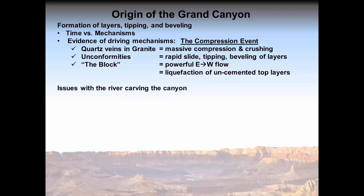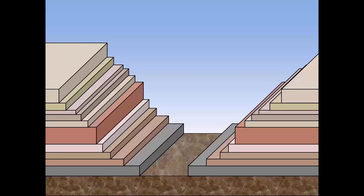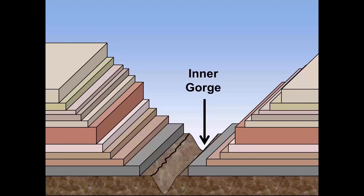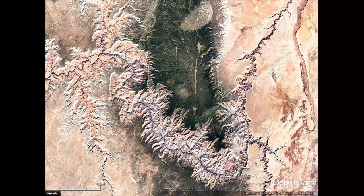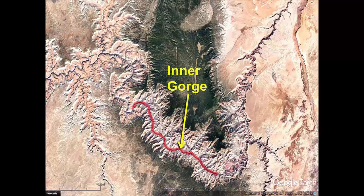Next, we'll discuss and critique the popular idea that the Colorado River cut the Grand Canyon. The canyon exposes another striking feature: in the middle of the canyon, beneath all the sedimentary layers, is a 46-mile-long deep inner gorge where the crushed basement crystalline rock layer of the Vishnu Schist is exposed. The rock walls of the inner gorge are jagged and very steep, extending up to 1,200 feet at its deepest point. We are dogmatically taught that the mighty Colorado River carved the Grand Canyon including this deep inner gorge. As we'll see, the river could never have cut these features no matter how much time is allowed.